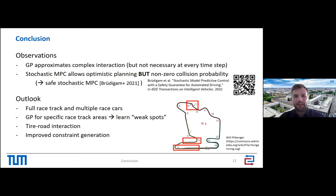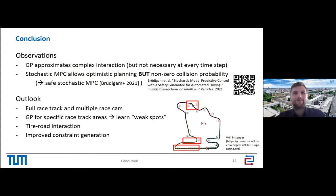Observations: the GP is updated at every step, which is probably not necessary since overtaking happens only at certain turns; updating every few seconds would suffice. SMPC is great for optimistic planning, though there is non-zero collision probability — a safe stochastic MPC framework with a backup plan could address this. Future work includes extending to a full racetrack with multiple race cars, learning weak spots, and incorporating tire-road interaction and ellipsoidal constraints.